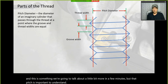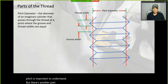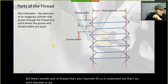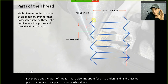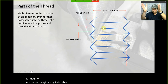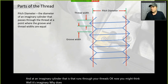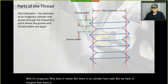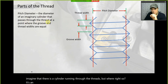There's another part of threads that's also important for us to understand: the pitch diameter. Imagine an imaginary cylinder that runs through your threads. It's imaginary — there is no cylinder here — but we have to imagine a cylinder running through the threads.